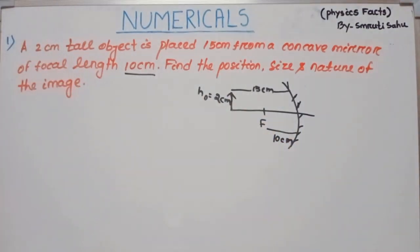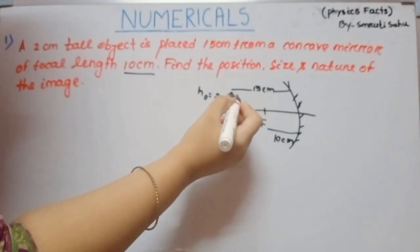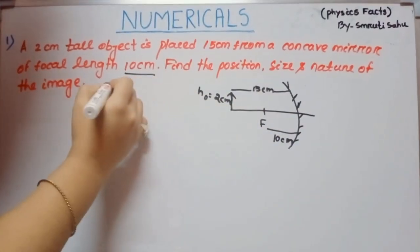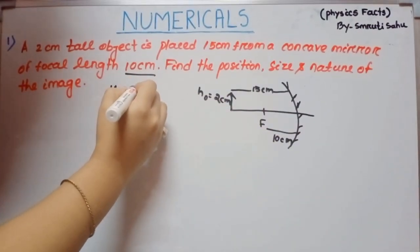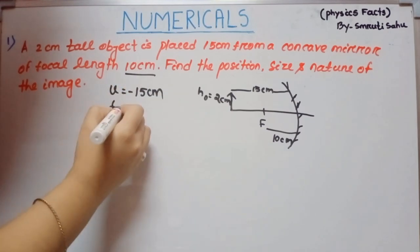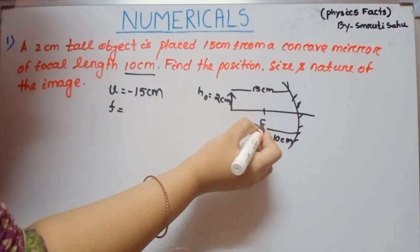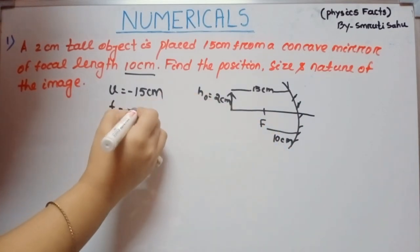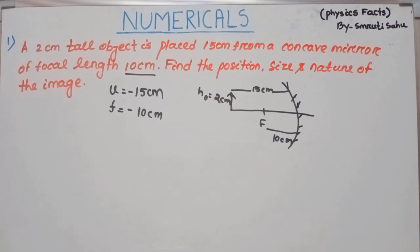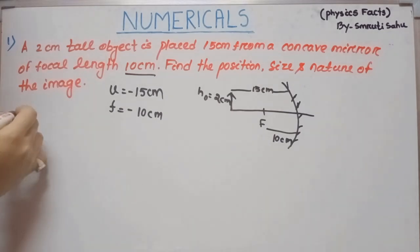Now, what is the sign convention for focal length and object distance? The object is to the left of the mirror, so object distance U has a negative sign. The focal length — focus is also to the left of the mirror — so focal length is also negative. We determine position, size, and nature of the image. First, we determine the image distance using the mirror formula.